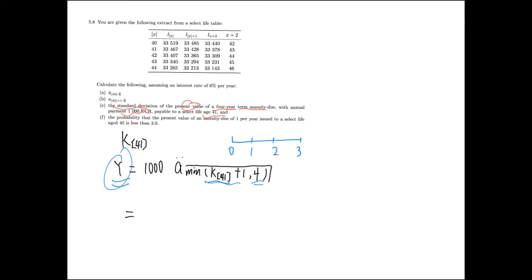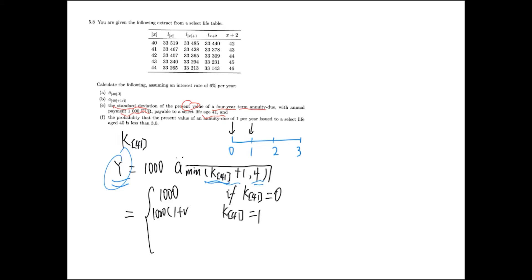Let's discuss this case by case. If k[41] equals 0, this person only receives one payment at time 0, so the present value is simply 1000. If k[41] equals 1, this person receives two payments at time 0 and time 1, and the present value is 1000 times (1 plus v). The same logic applies when k[41] equals 2. And if k[41] is greater than or equal to 3, no matter how long, at most four payments are received, and that gives us the present value for that case.